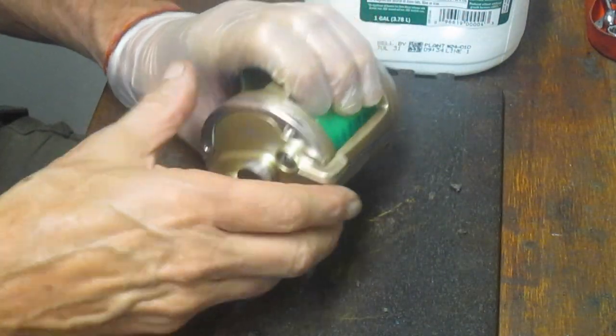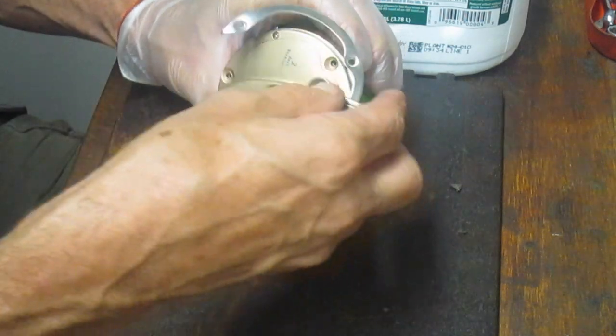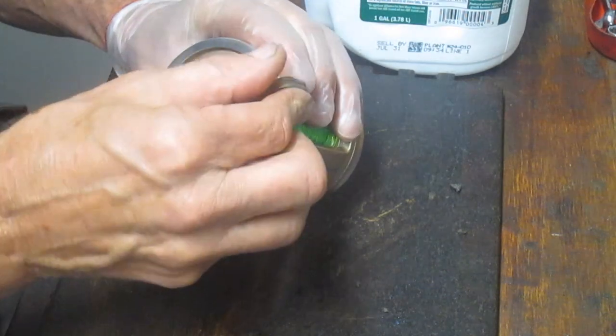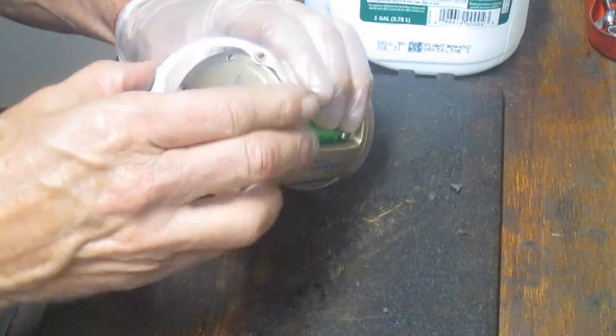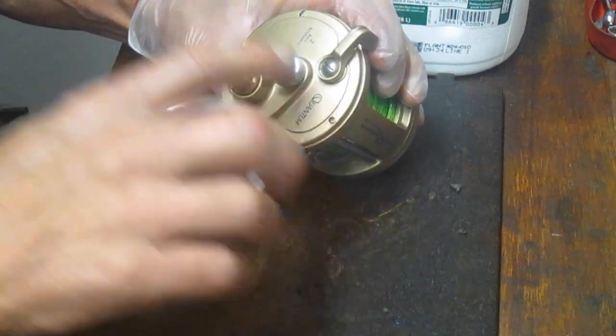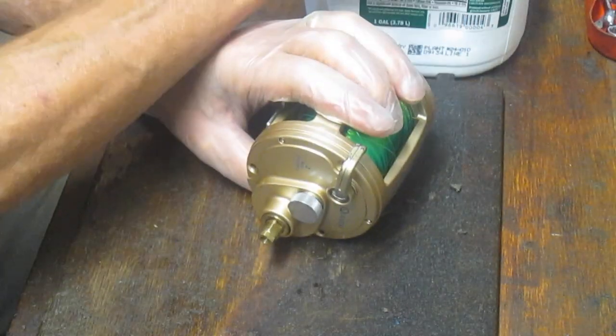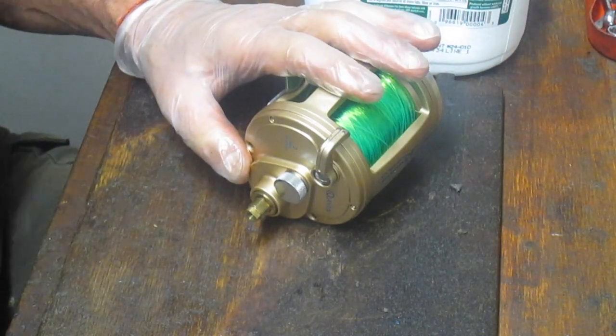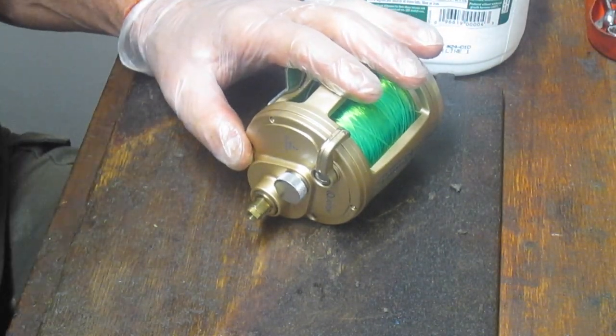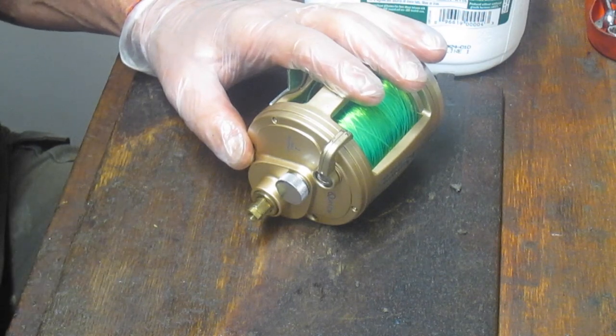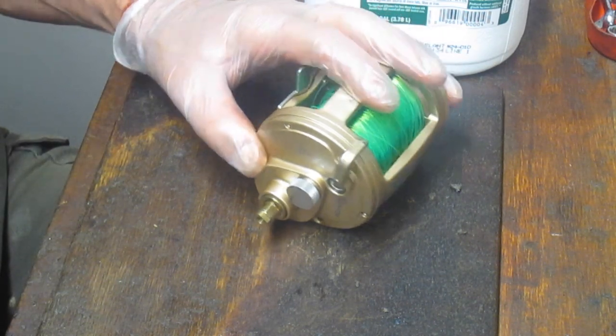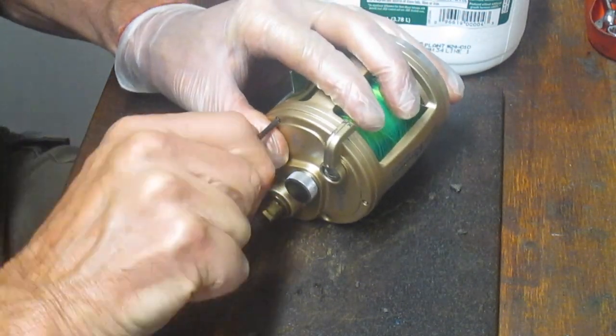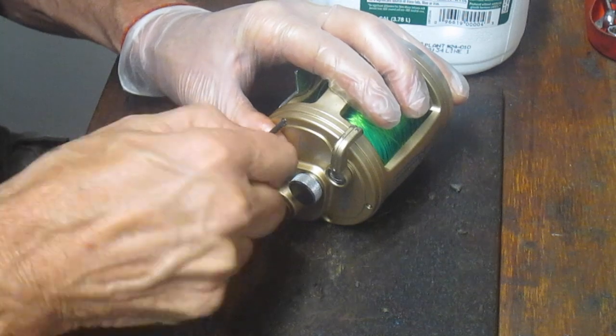So I just took those three side plate screws out just to make sure that they're all the same size, and they are, so they can go to my parts tray now. And I think we should be able to remove the side plate unless they're hiding a screw under here, which they are. You get used to these little tricks after a while, it seems. I just did a Penn Squall and they were hiding screws underneath the trim ring.